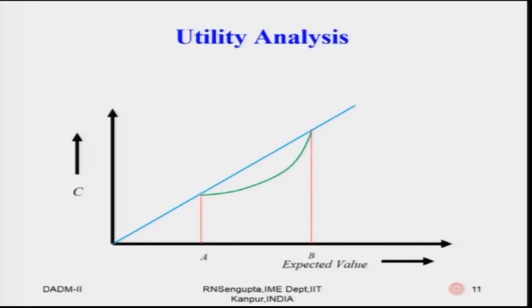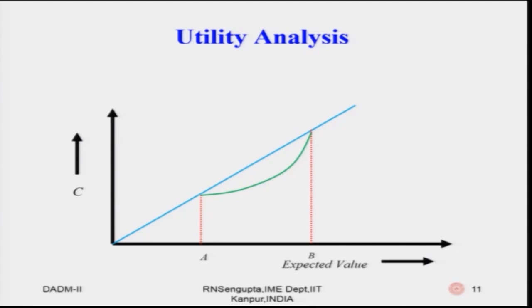On the y-axis, we measure the certainty value corresponding to the gamble. Draw a 45-degree line (the blue line on the slide). Consider the utility is linear — U(W) = W — so the expected value of the gamble is A×0.5 + B×0.5, which is just the midpoint of A and B.